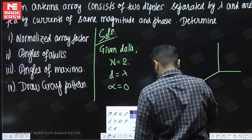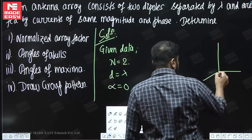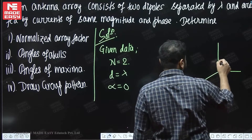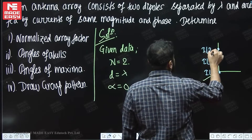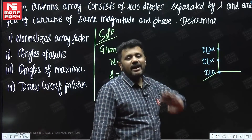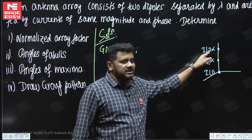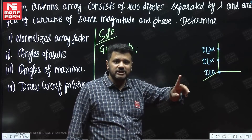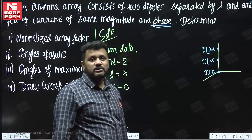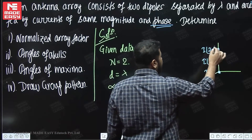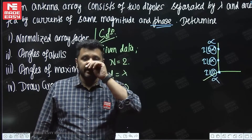Suppose these are the currents. This is one element, another element — suppose n elements. Now, this is fed with current I₀, this is I·α, this is I·2α, and so on in antenna arrays. So what is alpha actually? Alpha is a phase difference — the phase difference between consecutive current-carrying elements. Here the problem says fed by currents of same magnitude and phase, meaning everyone is in the same phase. So same phase means what is the value of alpha? It will be 0, because the phase difference between them is 0.